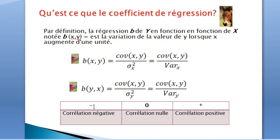For the interpretation: a negative coefficient of regression means that both traits are negatively correlated; a null regression coefficient means that both traits are independent or have null correlation; and a positive regression means both traits are positively correlated and evolve in the same direction during selection.